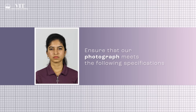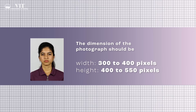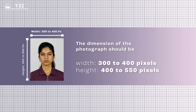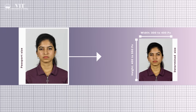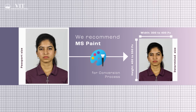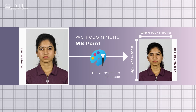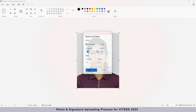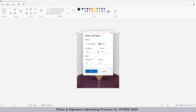After the photoshoot, ensure that your photograph meets the following specifications. The dimension of the photograph should be within a width of 300–400 pixels and a height of 400–550 pixels. For this dimension conversion, we recommend using Microsoft Paint, as it allows you to resize your passport size photo to the specified dimensions, format and size. Please open your photo using Microsoft Paint and select the Resize and Skew option. Enter the dimensions: 300 pixels in width and 400 pixels in height, and click OK.